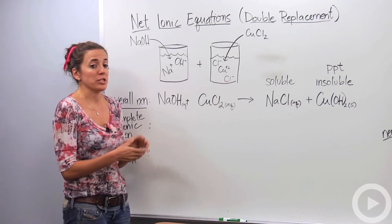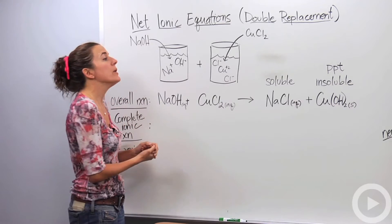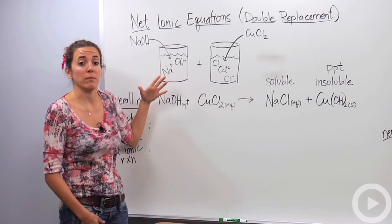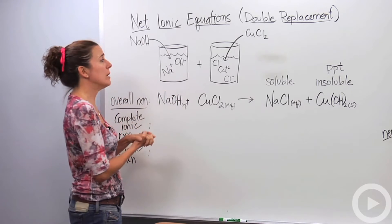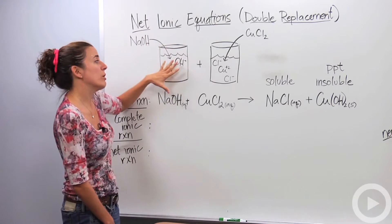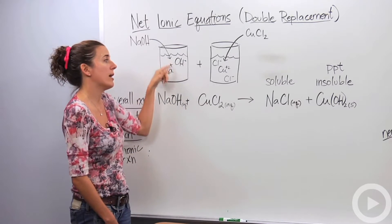A double replacement reaction is when two ionic compounds come together and switch partners. Typically you have it in an aqueous solution, meaning that these compounds are in water making solutions. For example, we have sodium hydroxide. When you put it in water, it actually breaks up into its ions - a sodium ion and a hydroxide ion.